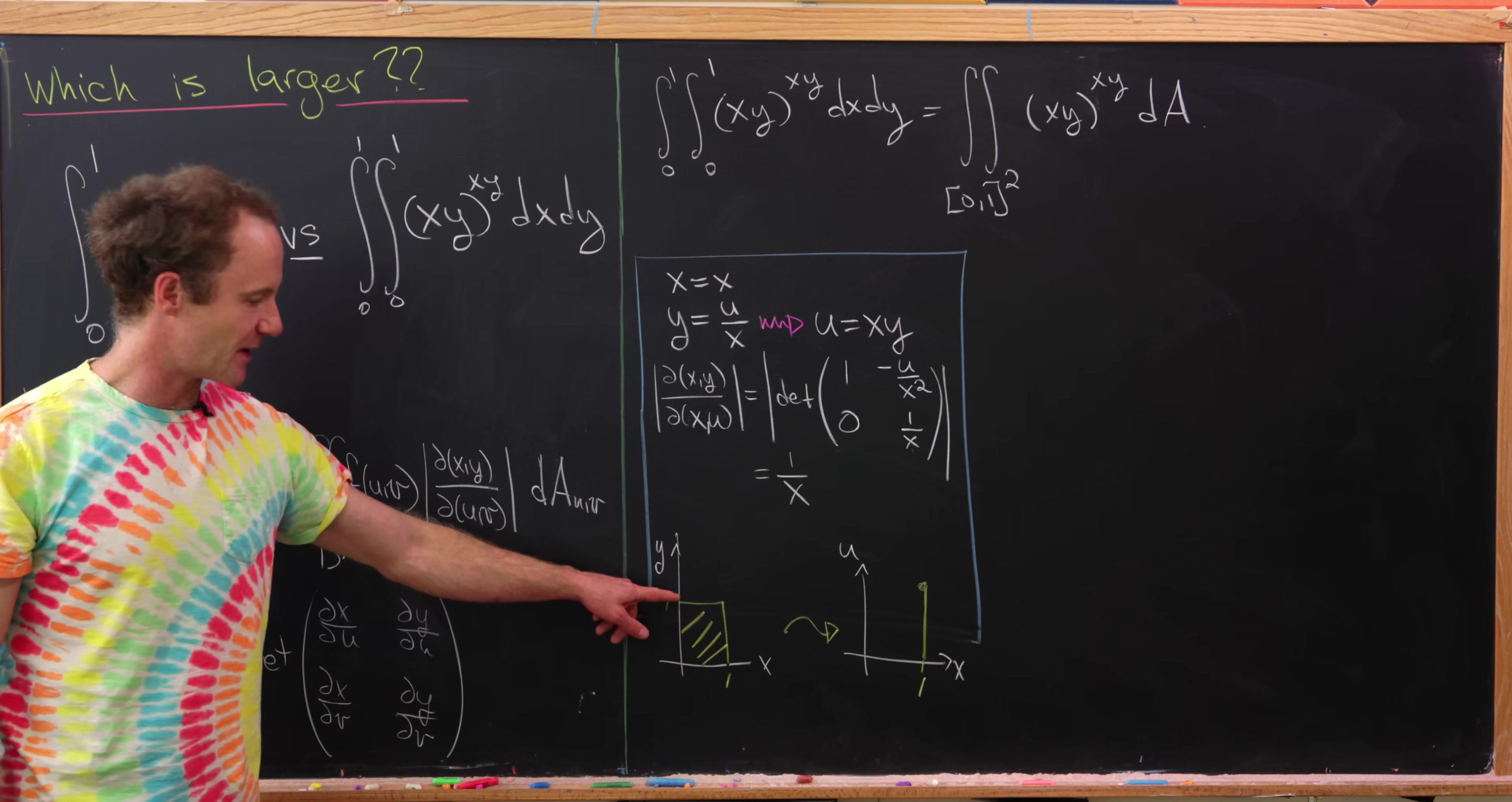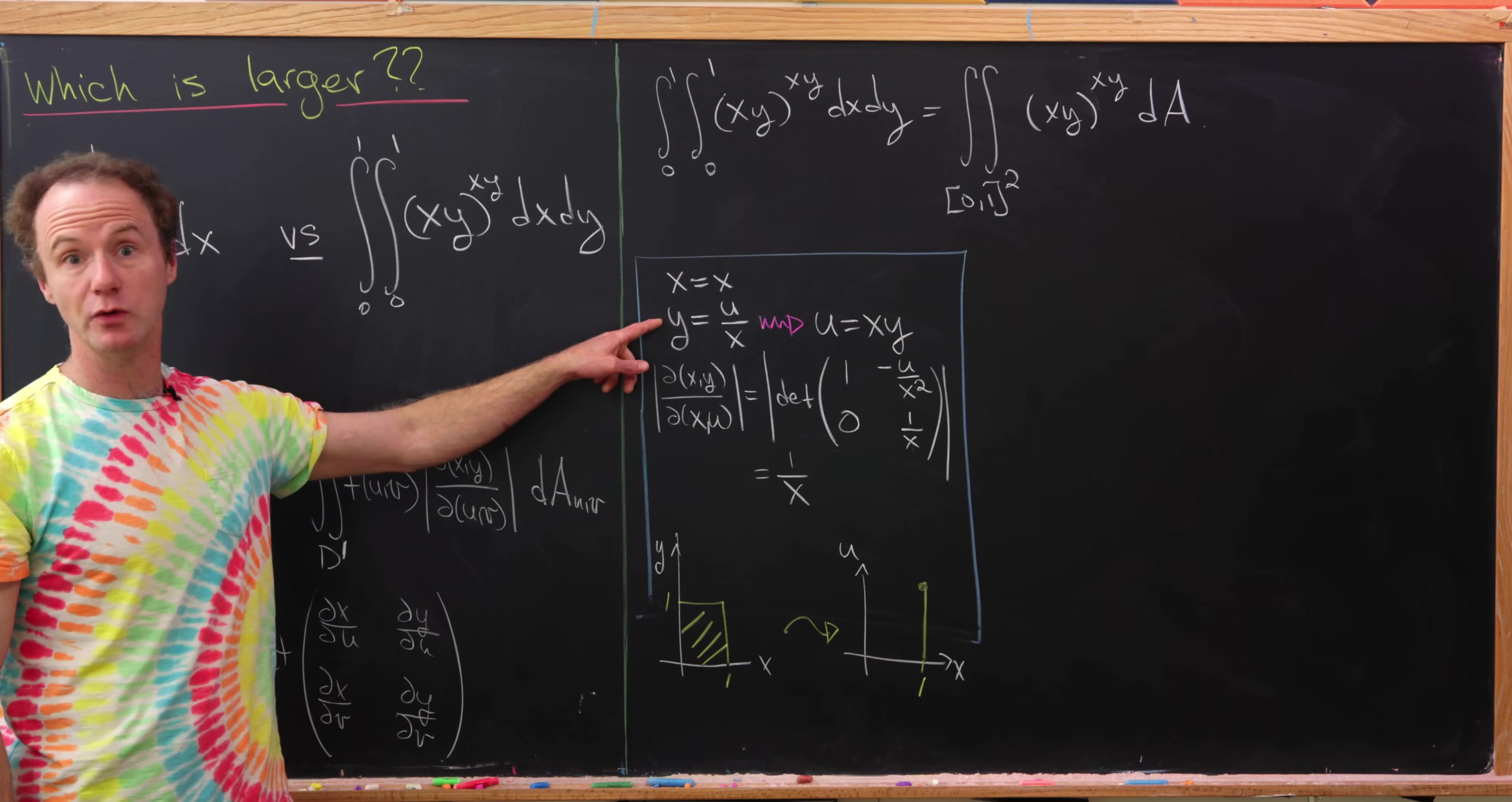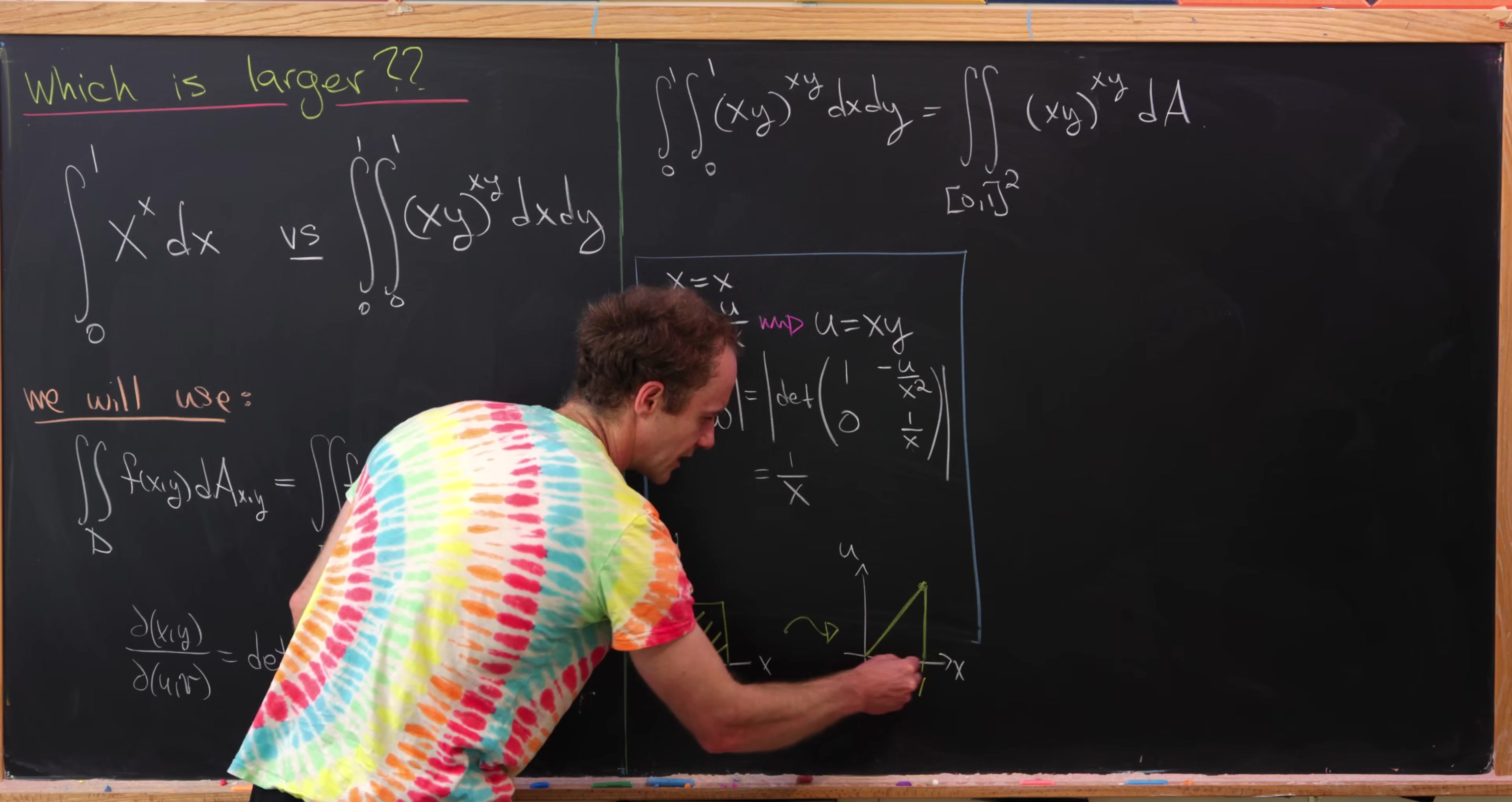Now let's look at the top edge here. With this top edge, y is always equal to 1, but x is varying between 0 and 1. But that means that we'll be along the line u equals x because notice we'll always have y equal to 1. So solving that, we'll get u equal x. So that'll be like this line right here. Great.